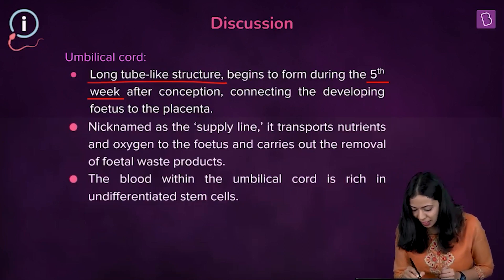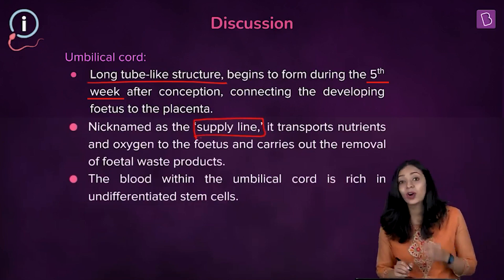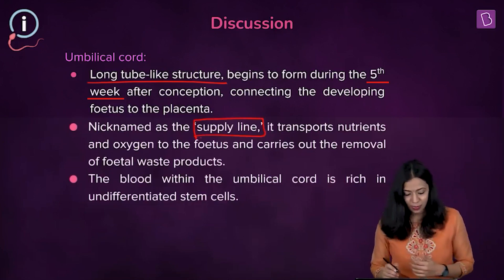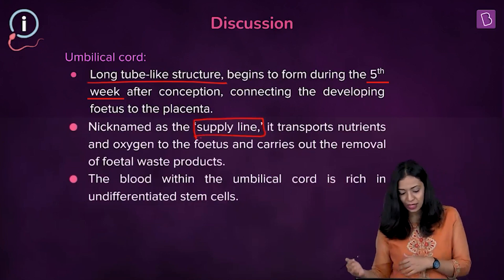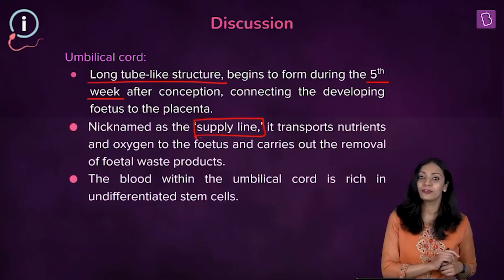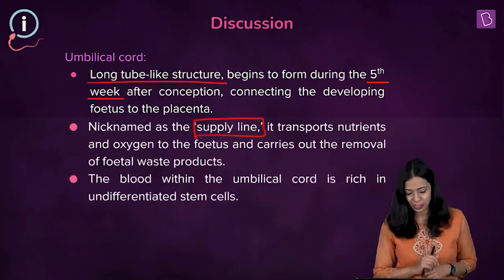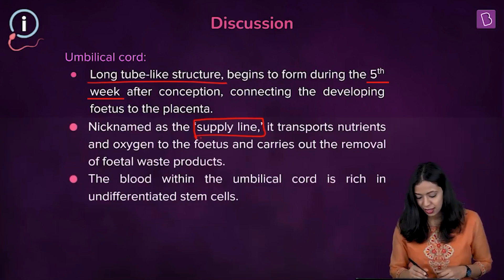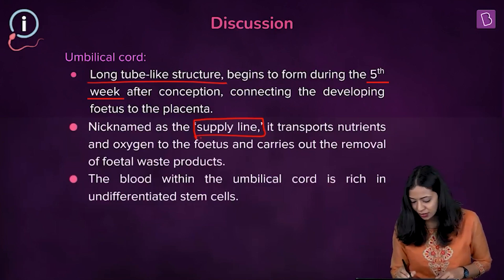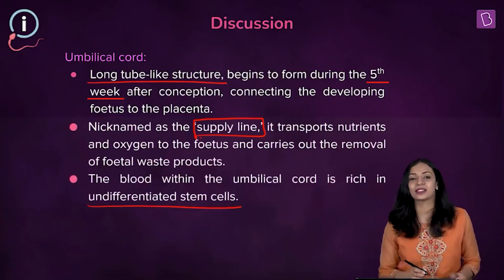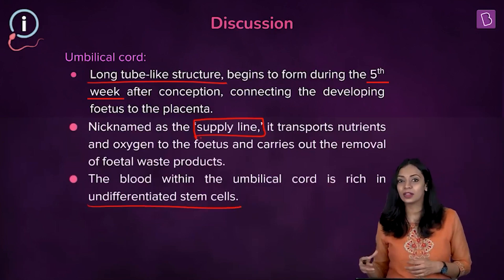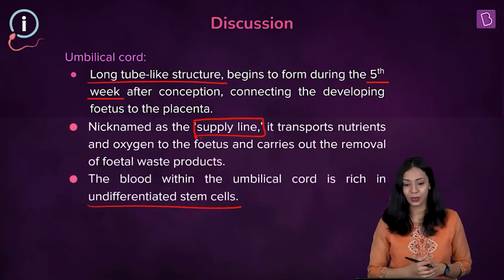The umbilical cord is nicknamed the 'supply line' because it transports nutrients and oxygen to the fetus and carries out the removal of fetal waste products. The blood within the umbilical cord is very rich in undifferentiated stem cells, which is why the umbilical cord is preserved.